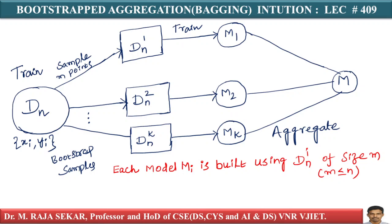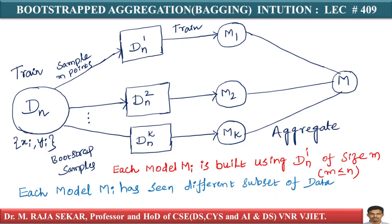You have the bootstrapping stage — the sampling is called bootstrap sampling and the samples are called bootstrap samples. Bagging is basically creating bootstrap samples, then on each of the bootstrap samples training a model, and then aggregating all these models into a final model — capital M.